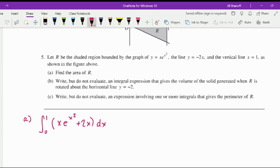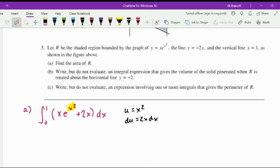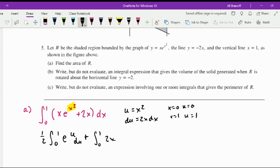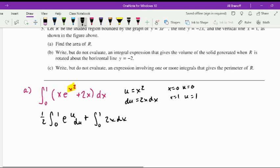We've got a bit of a u-substitution idea here. If I let u equal x squared, then du is 2x dx, so we're going to have that extra factor of 2 to deal with. If you want to change your limits of integration, notice that when x is 0, u is also 0, and when x is 1, u is also 1, so they're going to be the same. We've got 1 half integral from 0 to 1 of e to the u.